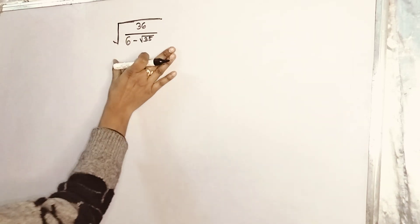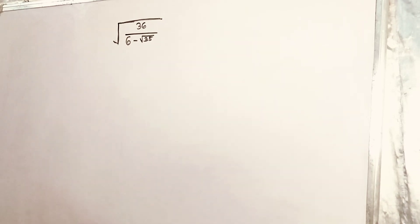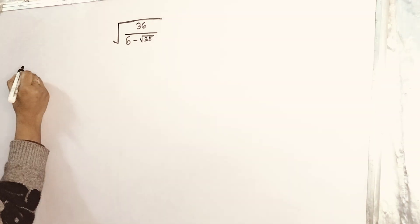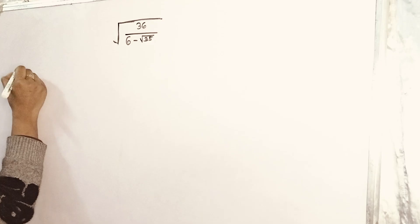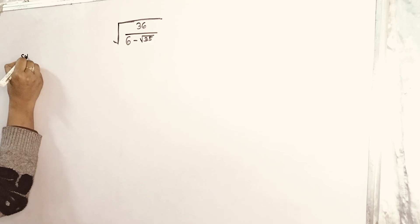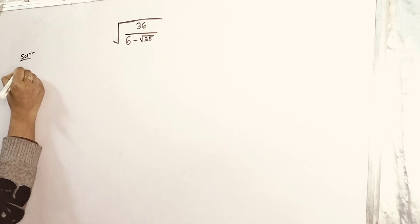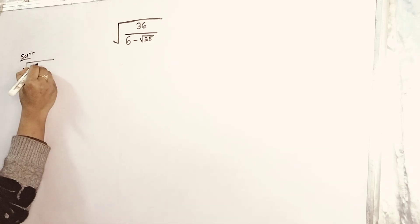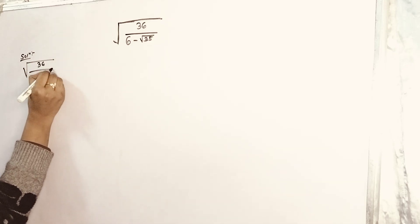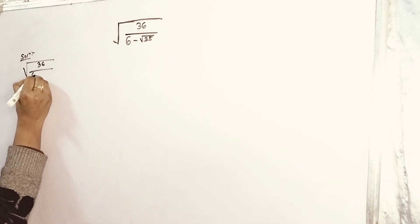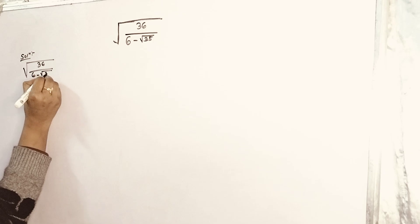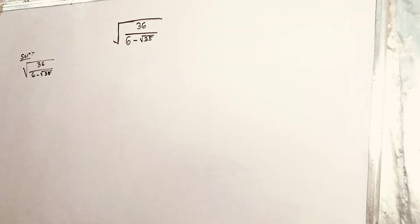Hello friends, today we will solve this equation: root under 36 divided by (6 minus root under 35). Let's see how we will solve this equation.